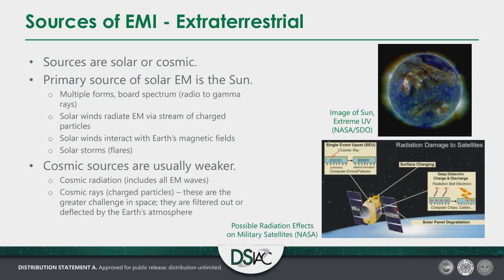Sources of EMI from an extraterrestrial perspective are primarily solar or cosmic. The primary source in our solar system is the sun, which radiates in multiple forms across a broad spectrum from radio to gamma rays. Solar winds radiate EM via a stream of charged particles that interact with Earth's magnetic field and can produce solar flares. Cosmic sources are usually weaker simply because they are much farther away. Cosmic radiation includes all kinds of EM waves and charged particles — a greater challenge in space than on Earth because they're usually filtered by Earth's atmosphere and magnetic field. Up there, you have to build in your own radiation shielding, otherwise you'll experience damage to chips and the satellite won't work.